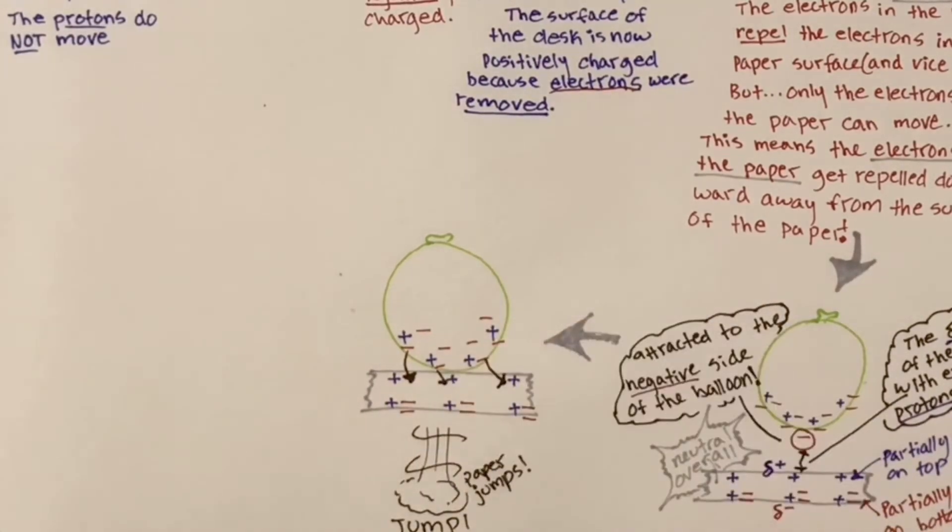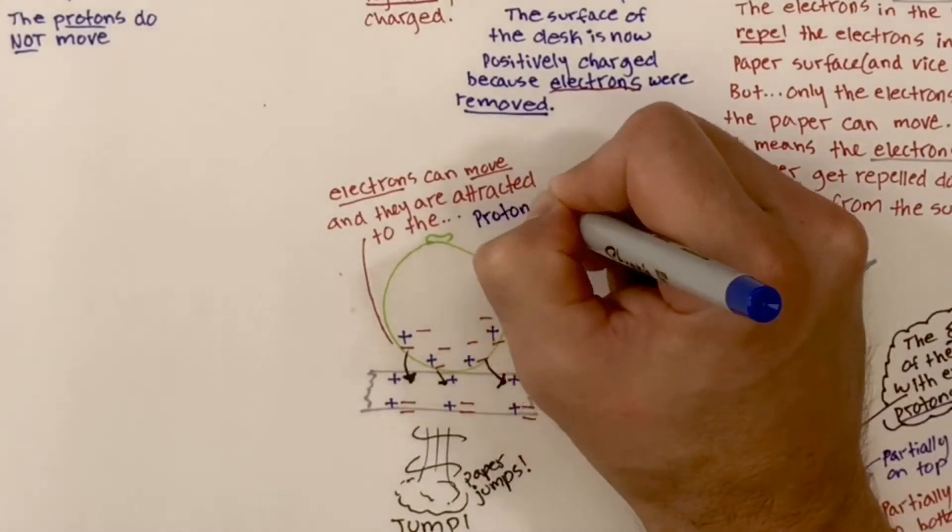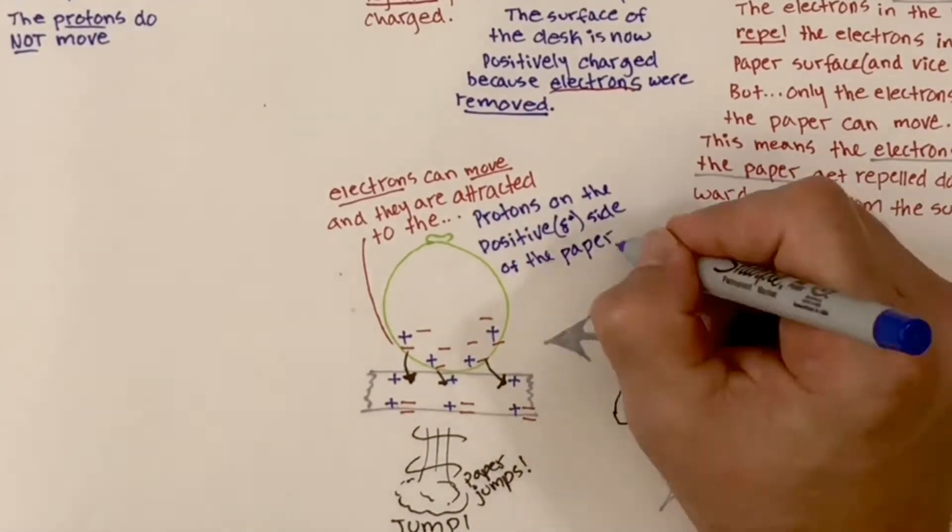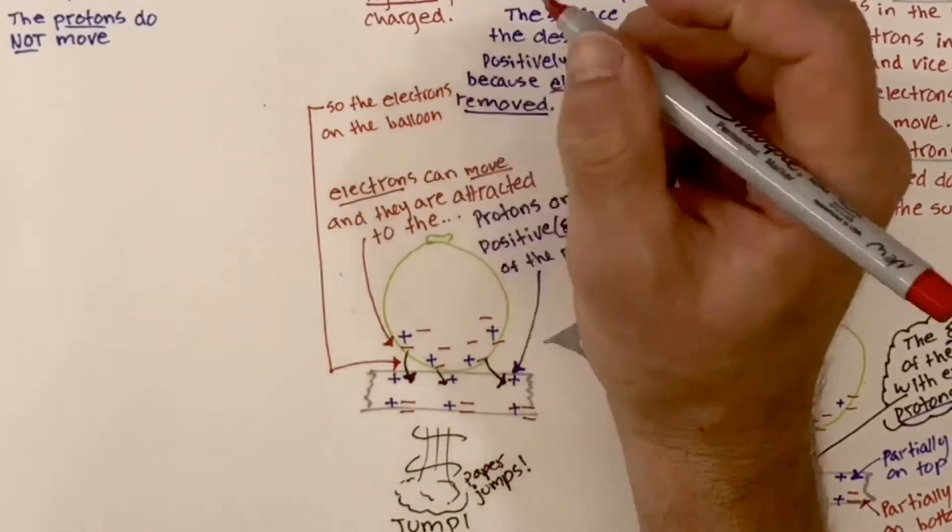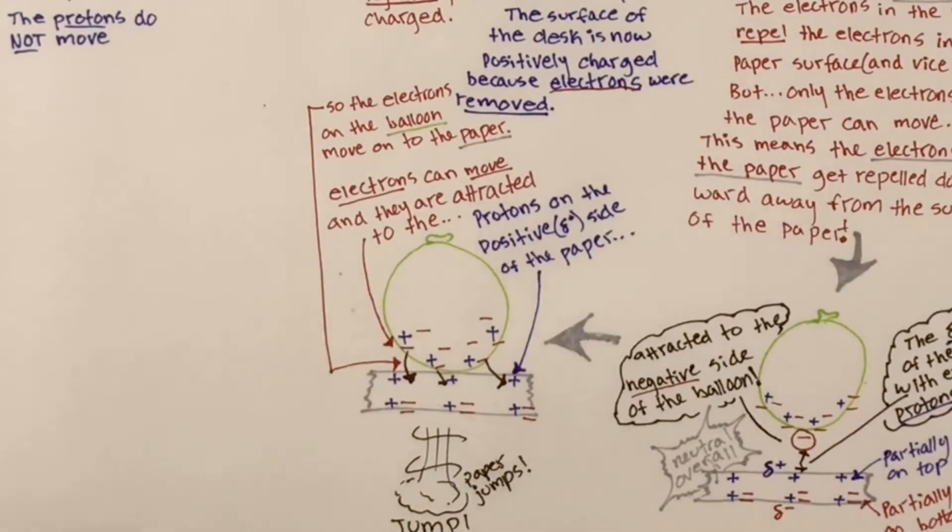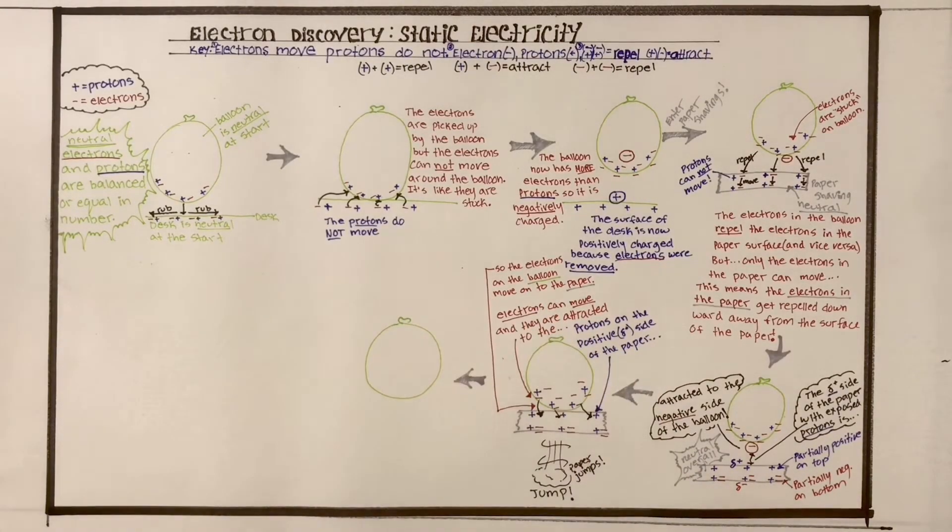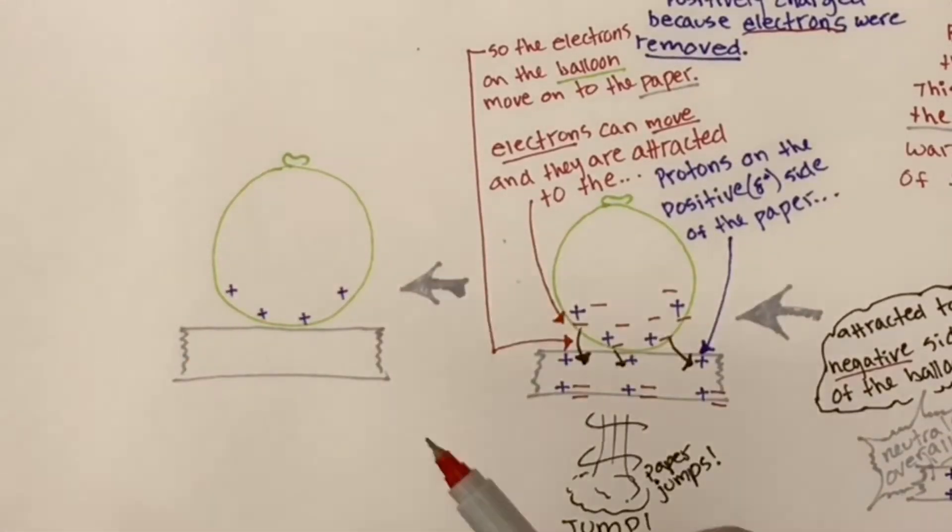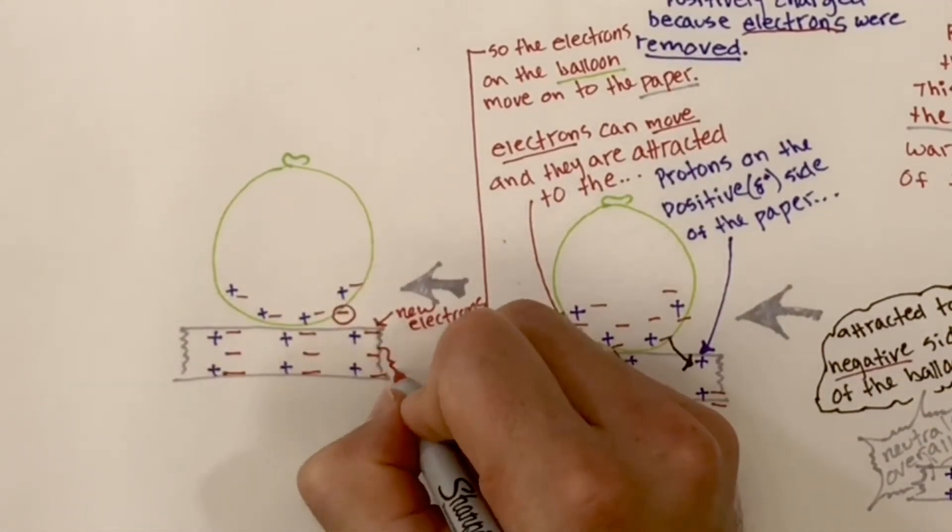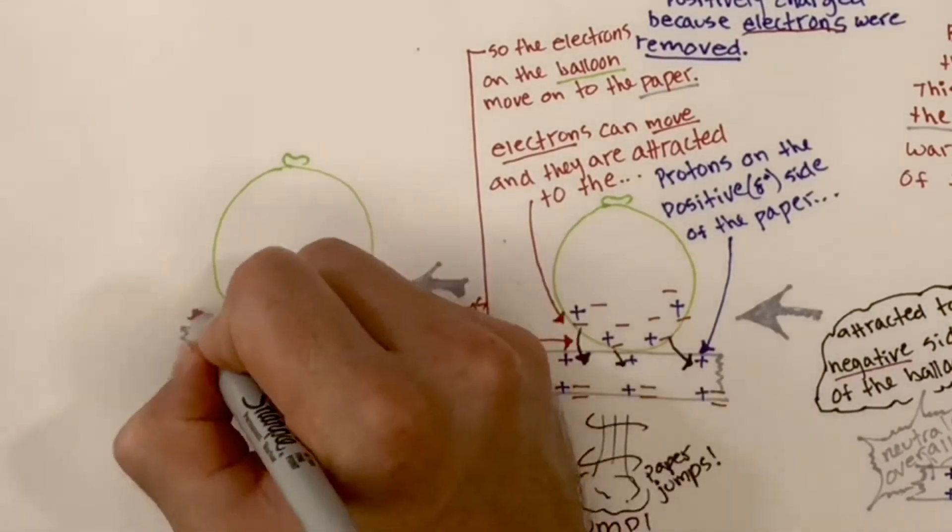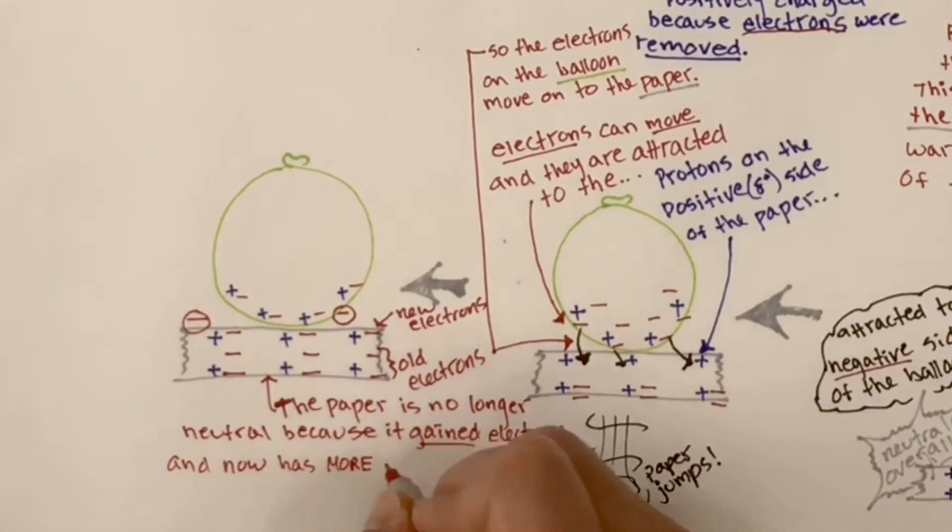We saw the paper leap up to the balloon. And now the negative part of the balloon, which had extra electrons, it's going to have some of those electrons which can move go back onto that positive side of the paper. But the protons on the positive side of that paper, that partially positive side, they can't move. So the electrons on the balloon move into the paper. What does that lead to now that we have extra electrons in this paper? Now we have new electrons in the surface of the paper and the old electrons. So there's more electrons in the paper than there is protons. So the paper is no longer neutral because it gained electrons. Now it's actually negative.